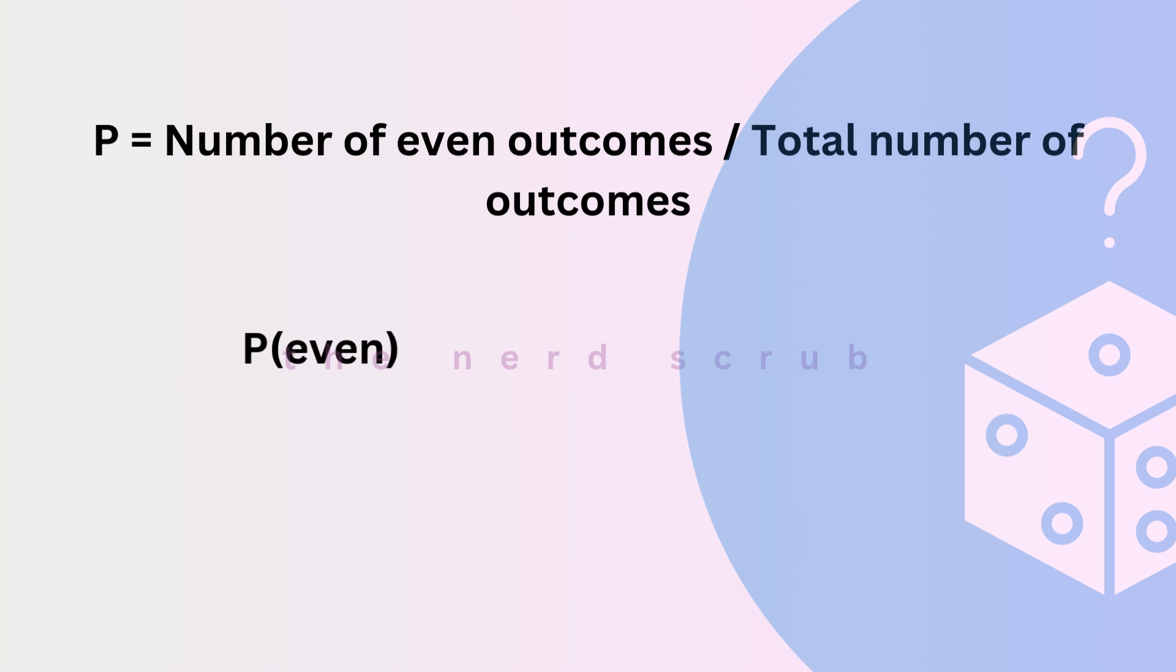that's P(even) equals three over six, which simplifies to one-half or 50%. This means there's a 50% chance of rolling an even number, simple as that.